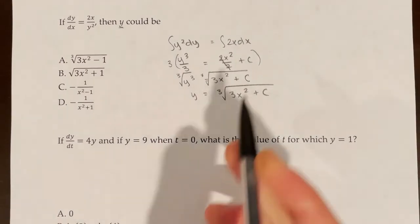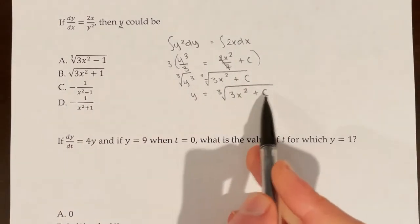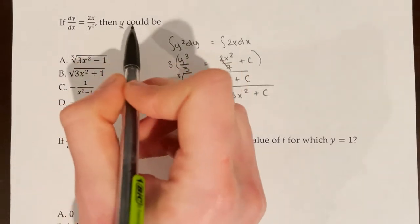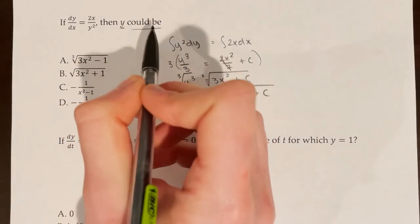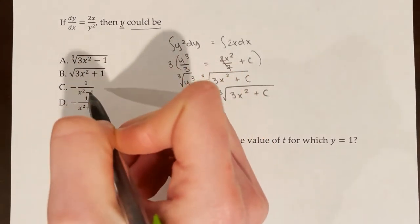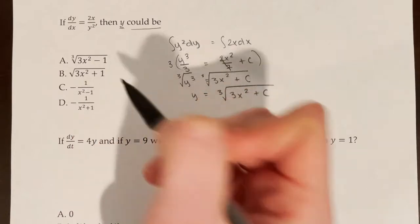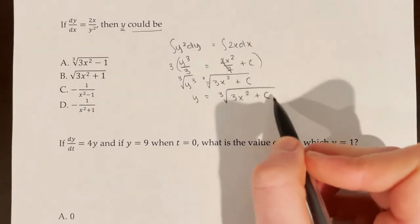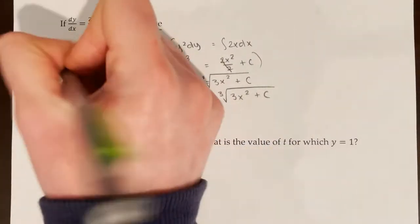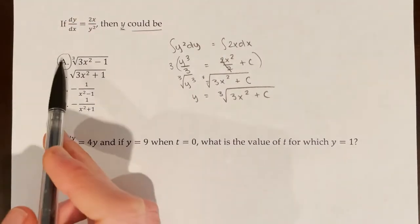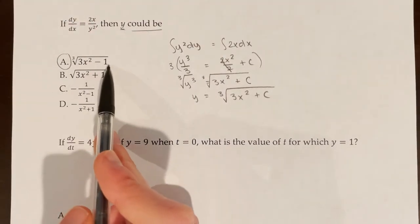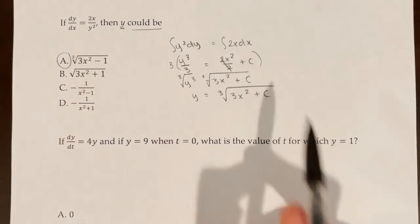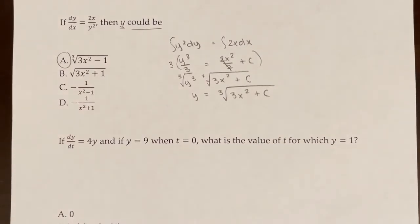None of the answer choices have a c in them — they all have numbers. The question says y could be, meaning one of these matches if a specific value is assigned to c. The answer that matches is choice A: ∛(3x² - 1), where c = -1. Therefore, A is correct.